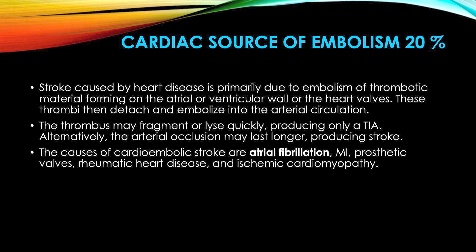The third cause of ischemic stroke is cardiac source of embolism. When the heart becomes a source of embolus formation due to conditions like MI, atrial fibrillation, prosthetic valves, rheumatic heart disease, or cardiomyopathies, thrombus forms inside the heart, travels through the carotid arteries into the brain, and causes thromboembolism — called cardiac source embolism.